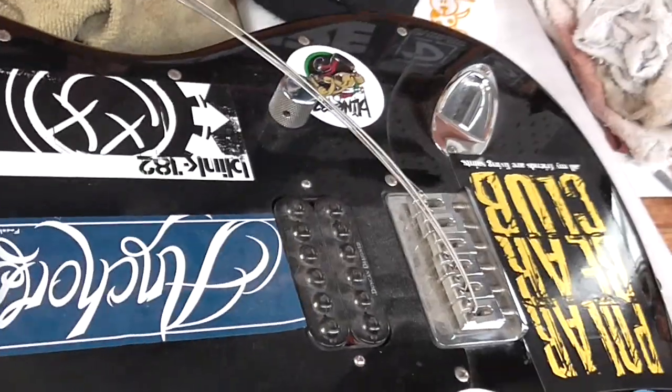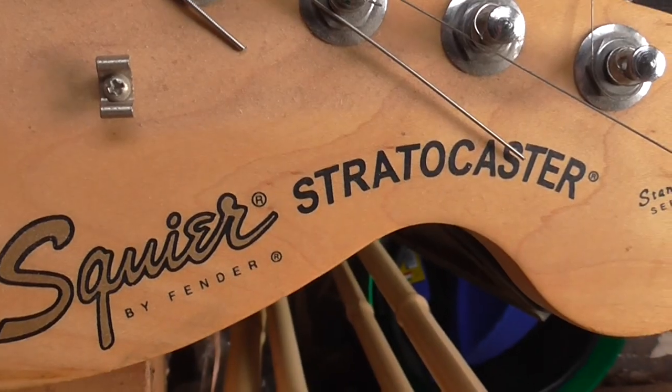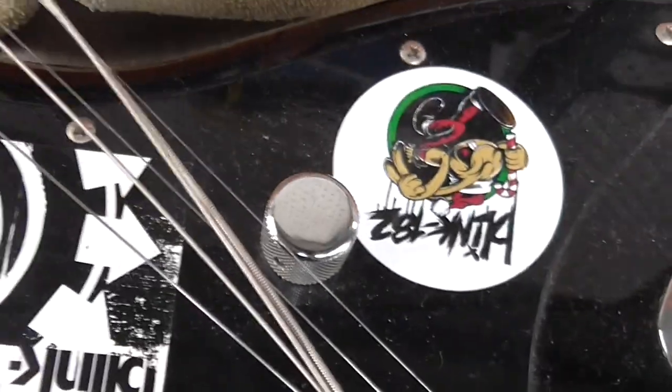There's a guitar I'm working on today. It's a Squire Strat, the Tommy DeLonge model—I think that's how you pronounce his name—with a Duncan Invader copy and just the one knob.